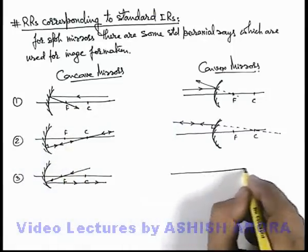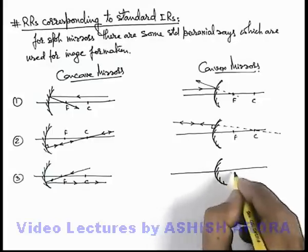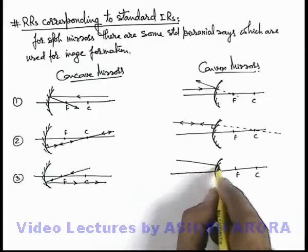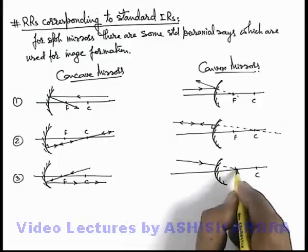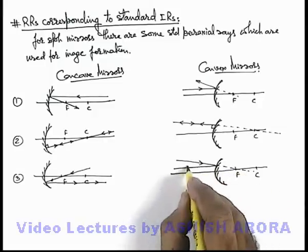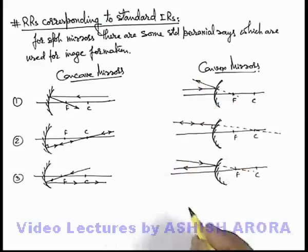The same thing we can define in case of convex mirror also. If a light ray is incident on the mirror in such a way that it appears to pass through focus before incidence, then after reflection it becomes parallel to principal axis, as the reverse light ray of ray 1.